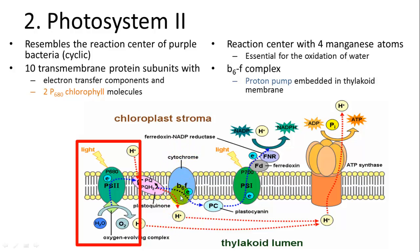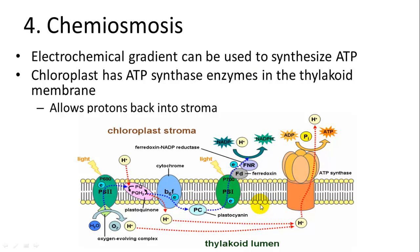Excited electrons from Photosystem II are accepted by plastoquinone, then passed to the b6f complex, which pumps protons into the thylakoid lumen, creating a concentration gradient. Protons then diffuse back through ATP synthase via facilitated diffusion — turning the mechanism that converts ADP into ATP, making energy available.